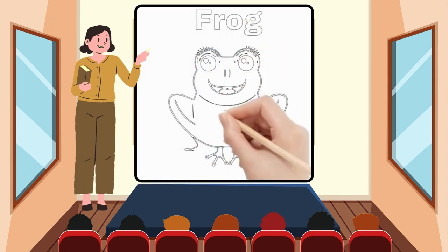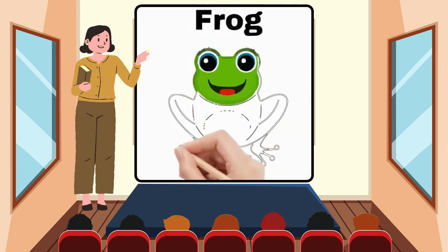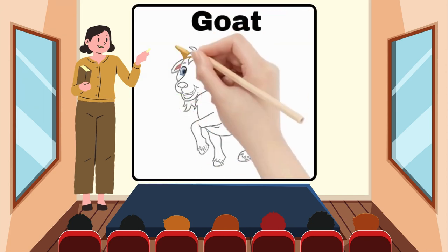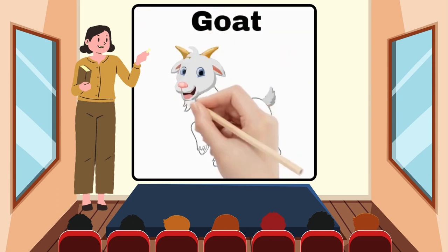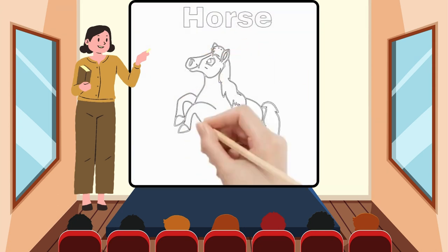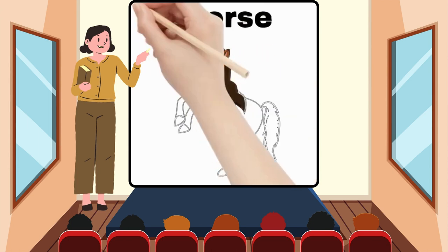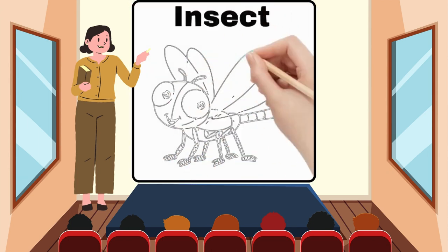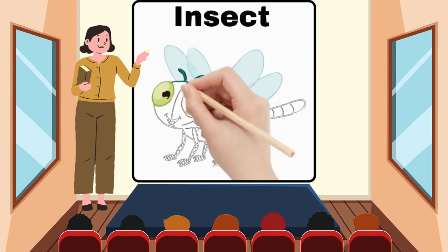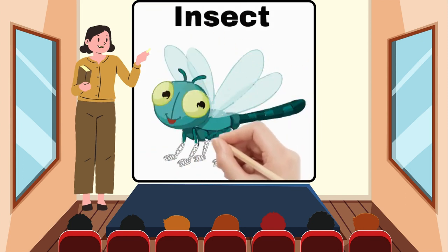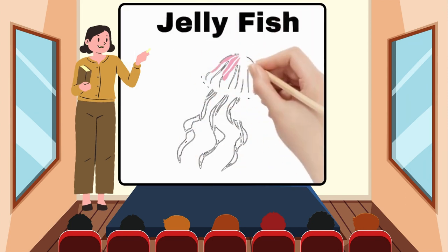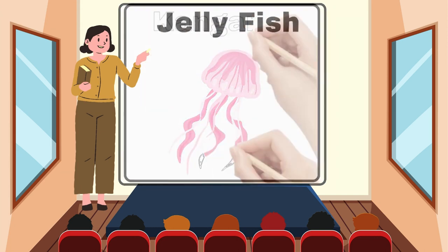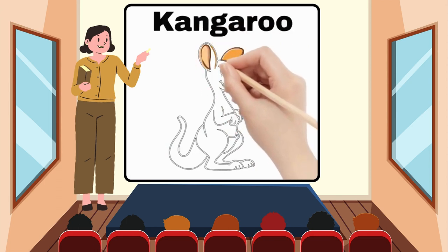F for Frog. G for Goat. H for Horse. I for Insect. J for Jellyfish. K for Kangaroo.